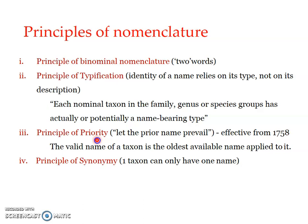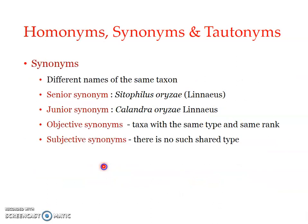The fourth principle is the Principle of Synonymy. One taxon can have only one name — it must be unique. If a taxon has more than one name, those are regarded as synonyms — different names for the same taxon. The first published name is the valid name and is referred to as the senior synonym. Later names are referred to as junior synonyms. There is only one senior synonym, but there can be many junior synonyms.